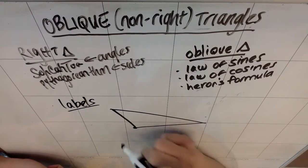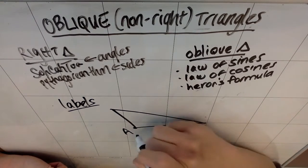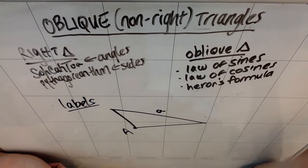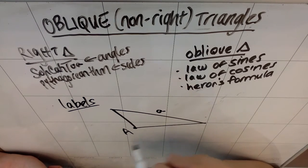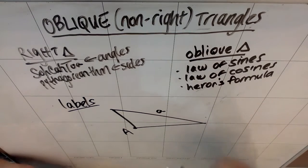Whatever vertex I label as a capital A, I'm going to label the opposite side, the one not touching that vertex with a lowercase a. So the vertex or the angle itself will be called capital A. The opposite side from that would be called lowercase a.